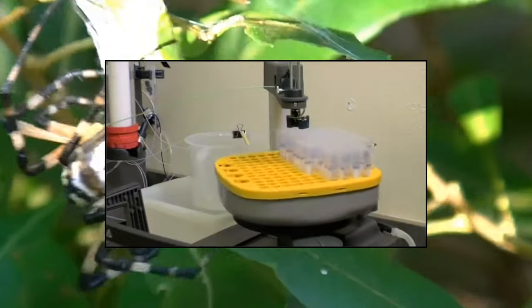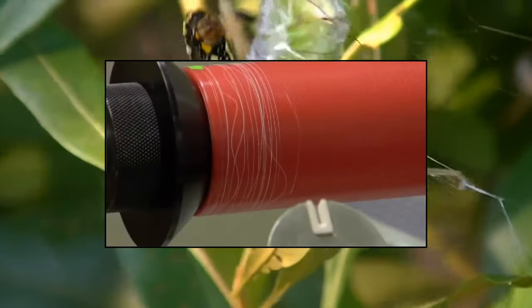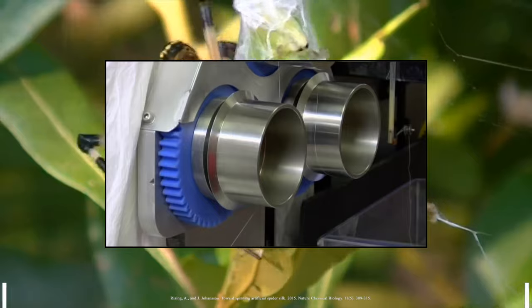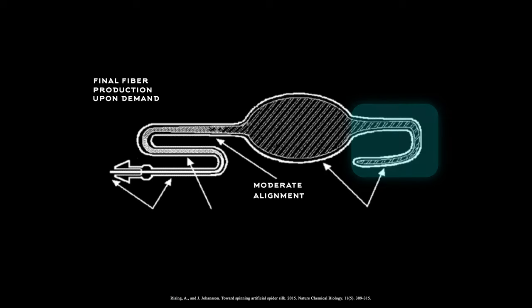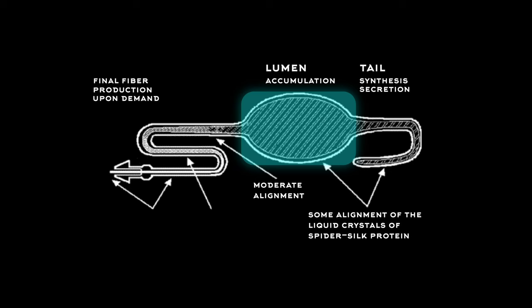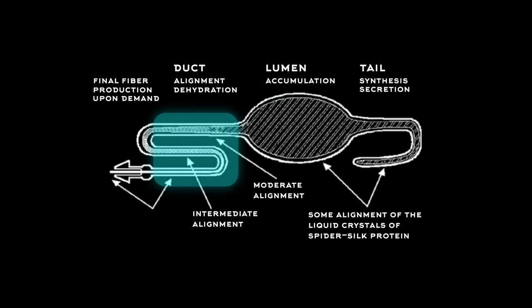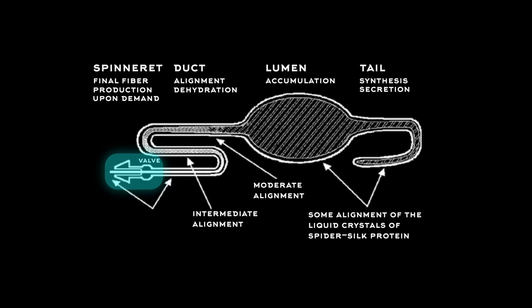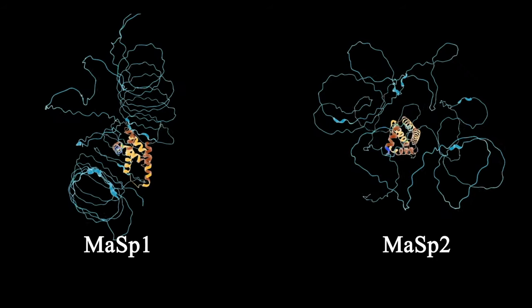Denaturing conditions are currently required during fiber formation, alongside organic solvents and chaotropic agents to keep the proteins folded correctly. This is alien compared to the rheological and chemical-physical conditions of the spider's glands, and may explain why the mechanical properties of genetically engineered silks have been disappointing.